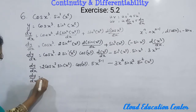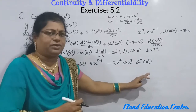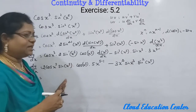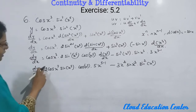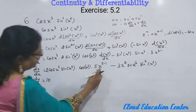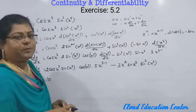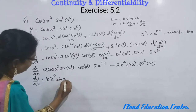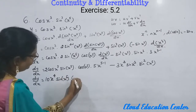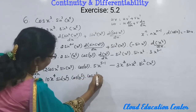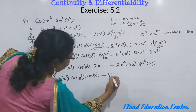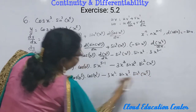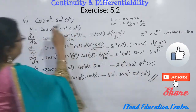dy/dx — almost differentiation is complete. Chain rule has also been applied. We just need to rearrange. When rearranging, we write the constant in front, then the variables. So: 2 and 5 give 10 in front, then x^4 (since x^(5−1) = x⁴), then sin(x⁵), into cos(x⁵), into cos(x³), minus 3x² into sin(x³) into sin²(x⁵). That is the answer for this particular question.